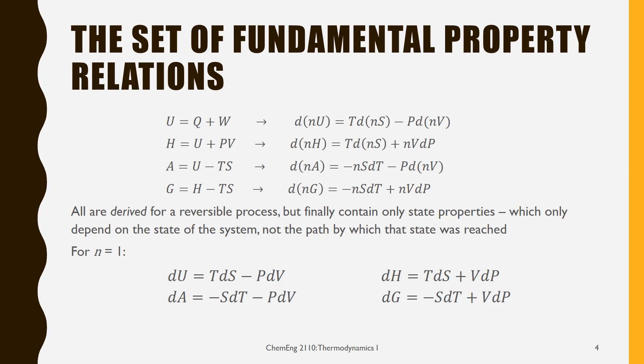Now A and G we haven't seen before, but we can define those. And A is the Helmholtz energy, and it is defined as U minus TS. And if I play the same game with this, dU minus TdS minus SdT using the product rule, I can get a fundamental relation for A. So the change in total Helmholtz energy is the negative total change in entropy times dT minus P times the change in total volume.